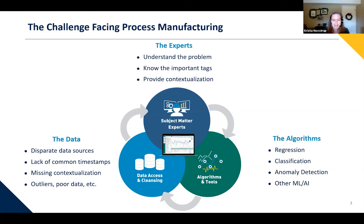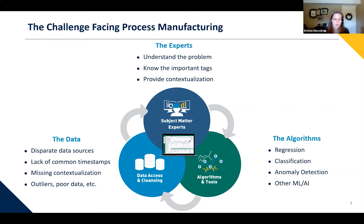The first challenge category is data access and cleansing. At the heart of doing any analysis, we need to have access to that data. It'd be great if that data was all perfectly aligned and existed in one data source, but the reality is we oftentimes have our main sensor data going into an on-prem data historian, lab data going into a different data source, and maintenance information about downtime events in yet another database. How do I get access to all that information and bring it together, understanding that not every piece of information is sampled at the same frequency?